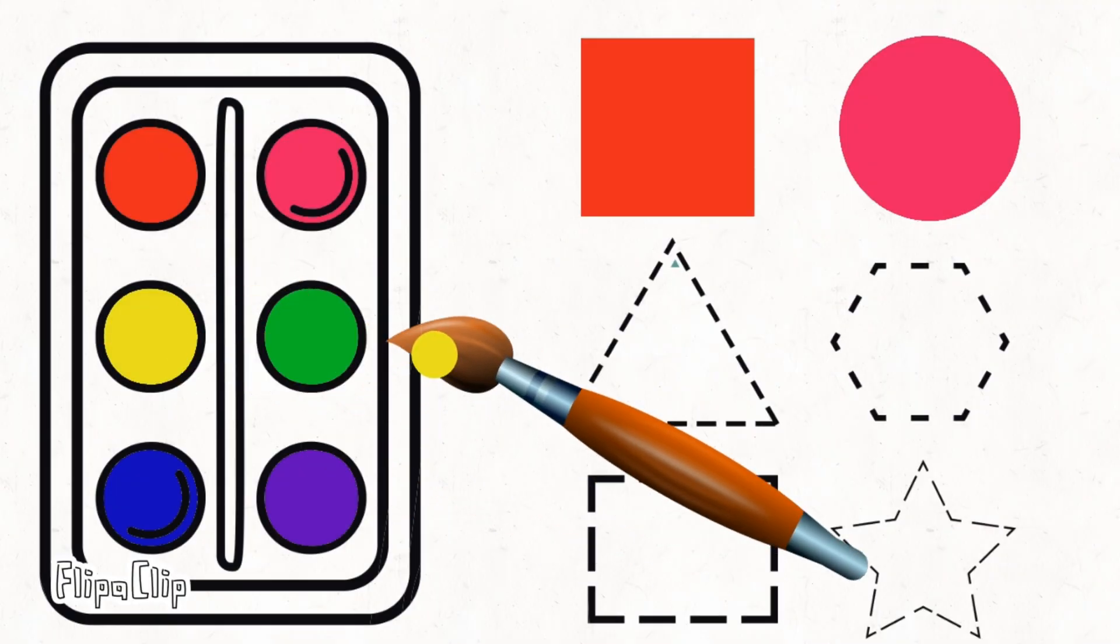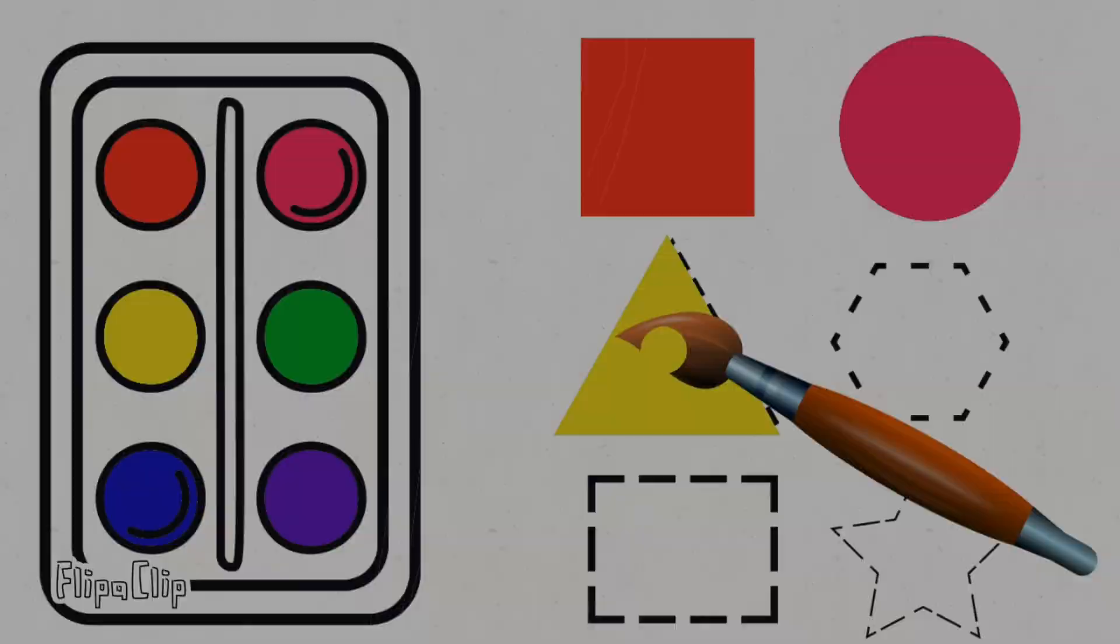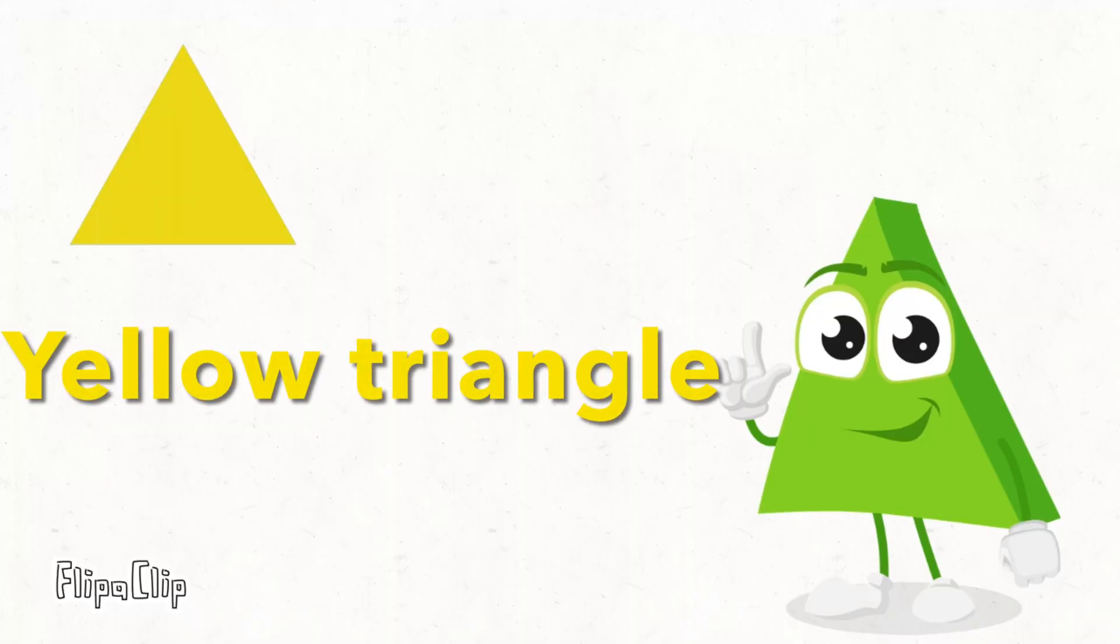Color yellow is like a sun. It's where we play to have some fun. Let's paint it yellow, a triangle now. A wondrous shape and colors, wow.